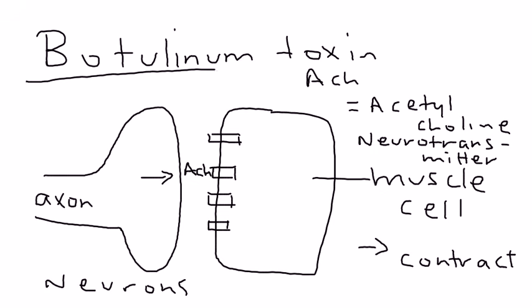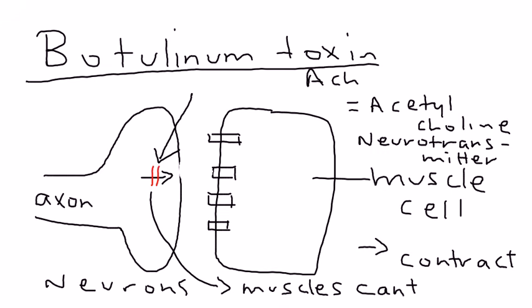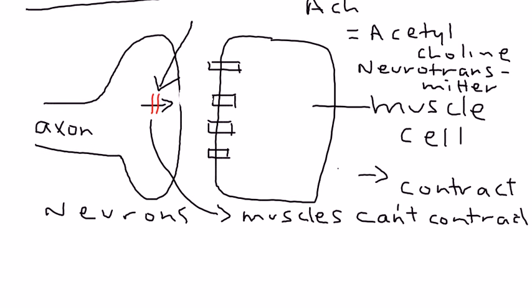So the acetylcholine neurotransmitter essentially is involved in proper function of a muscle. What botulinum toxin does is it blocks this. It blocks the release of acetylcholine. So you don't get acetylcholine coming out of the neuron and interacting with the muscle cells. So if that happens, that leads to the inability of contractions. So the muscles can't contract.